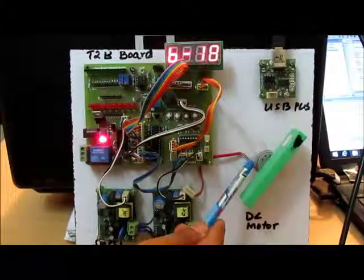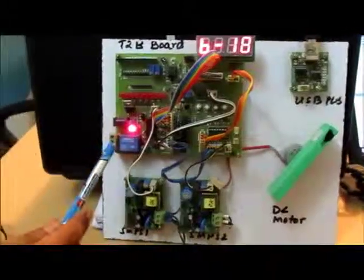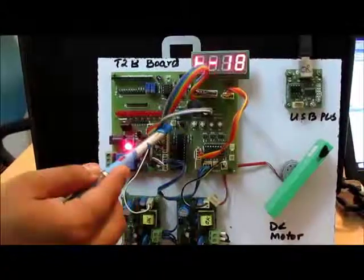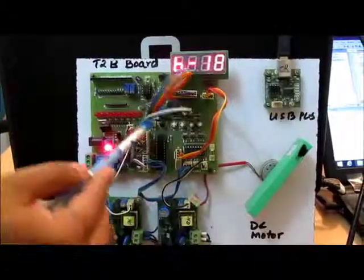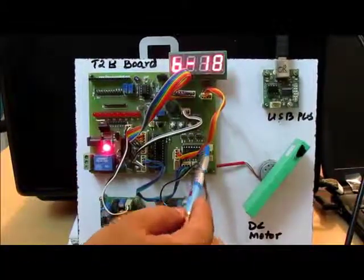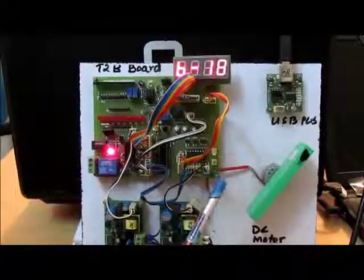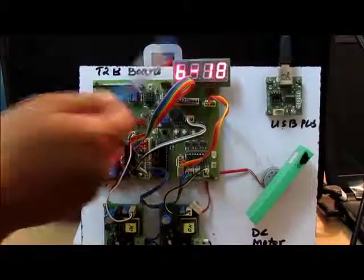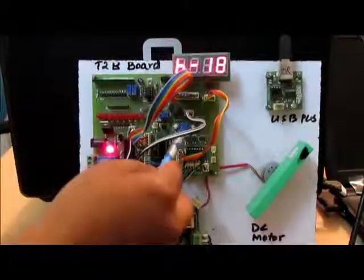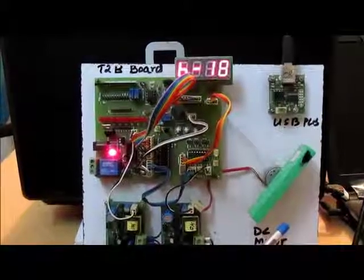Here we have our DC motor. Here we have our T2P board, that is the Theory to Practical Development board. Here we have the microcontroller. This one is the motor controller IC L293D. This one is a 7-segment display for showing the percentage PWM, that is the duty cycle, and here we have three keys for increasing and decreasing the duty cycle.